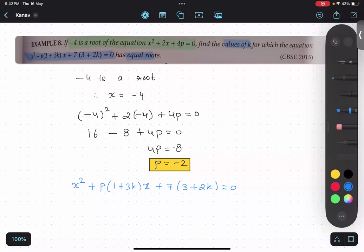What does equal roots mean? Alpha equals to beta? Yes or no? Alpha equals to beta. Does that seem clear?